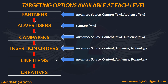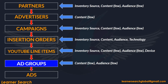At the IO and Line Item level, all the targeting options available in DV360 can be found. At the Line Item level, the options differ as per the Line Item type. YouTube Line Items have an extra layer called Ad Groups. In YouTube Line Items, you can find Content with a few options, Audience with a few, and Device. At the Ad Group level, you can find Content and Audience targeting.